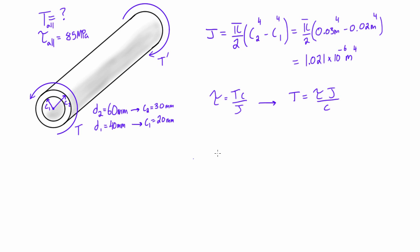Alright, so if we go and plug in some numbers for this, let's bring it down here. So we have T was equal to shearing stress J over C. So when we plug this in, we're going to put in our shearing stress, that allowable one that's 85 MPa, and we're going to multiply this by our J, which is 1.021 times 10 to the negative 6 meters 4, and then bring this all over a value of 0.03 meters.